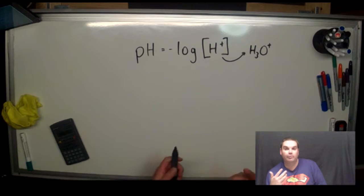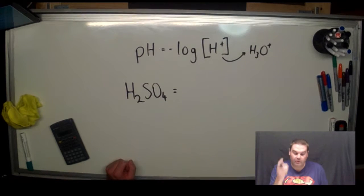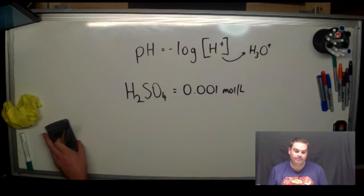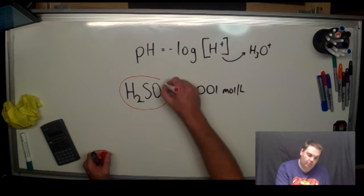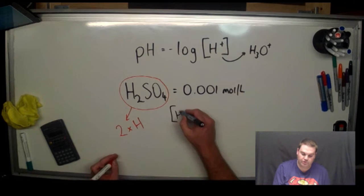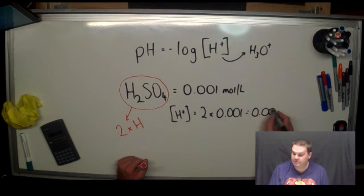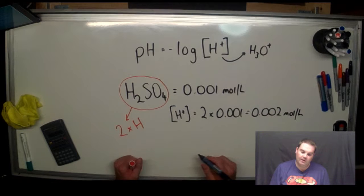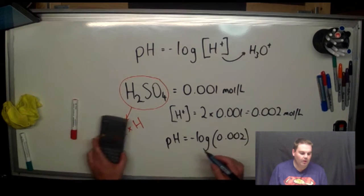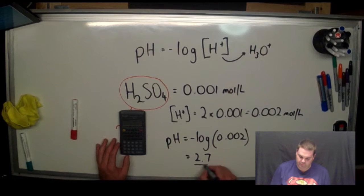But what happens if we have a diprotic or triprotic acid? So we're going to look at sulfuric acid here, H2SO4, with a concentration of 0.001 moles per litre. Now what you've got to remember is that in one molecule of that, we've actually got two hydrogen atoms. So that means that the concentration of hydrogen in this case is actually going to be two lots of 0.001, so 0.002 moles per litre. So if we do pH equals negative log 0.002, we get a pH of 2.7.